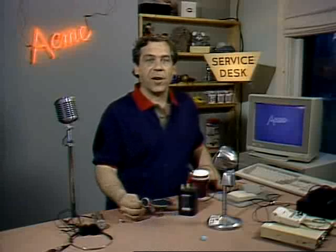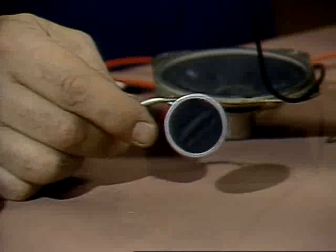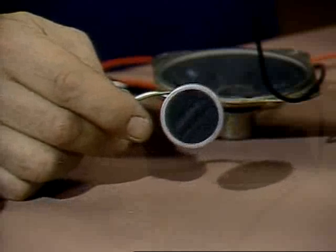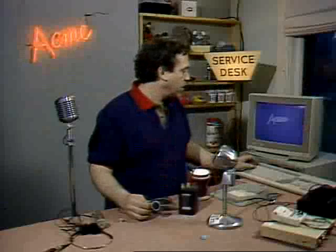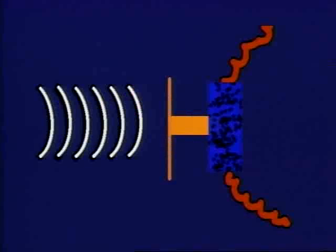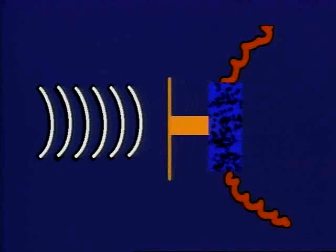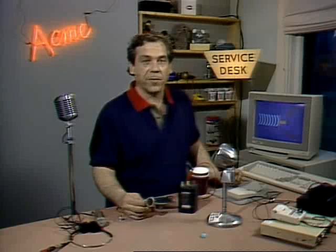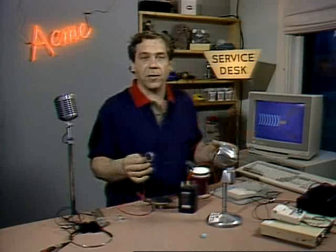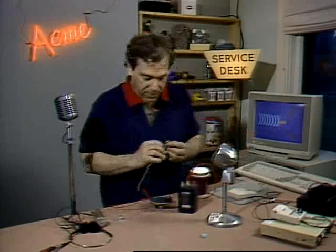This is Tom Edison's carbon microphone. It launched the telephone system and modern broadcasting. Inside is a bundle of loose carbon grains. A diaphragm, like your eardrum, is connected to the carbon grains so that it compresses and decompresses the grains according to the sound waves falling on it. The amount of electrical current that the grains will pass is proportional to the amount that they are squeezed. The wiggling electric currents that this produces are an analog of the sound pressure wiggles that hit the diaphragm.